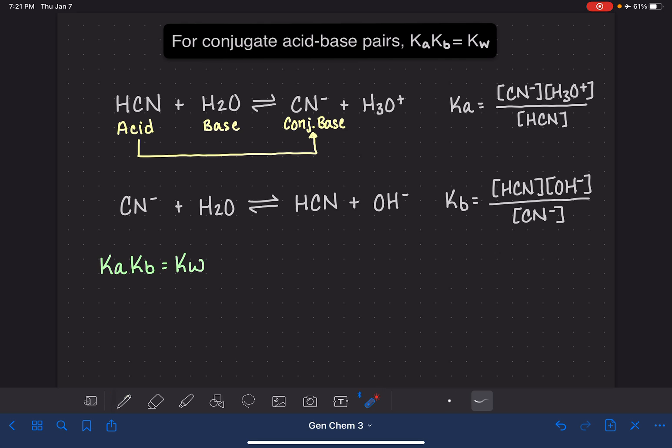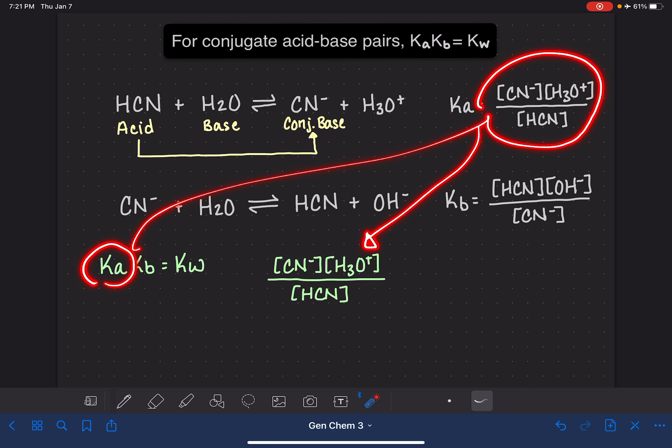So I'm going to take the Ka equilibrium expression. Instead of writing Ka, I'm going to write CN- H3O-plus over HCN. What I've done there is just taken the Ka, which is this right here, and written it in this spot. I'm going to put some big parentheses around this whole thing.